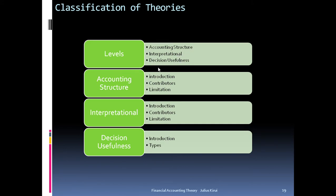In accounting structure we look at the introduction, contributors, and limitation. In interpretation we look at the introduction, contributors, and limitation. Then we come to decision usefulness, where we look at the introduction and types. This is our key area, so we'll be expounding on decision usefulness.